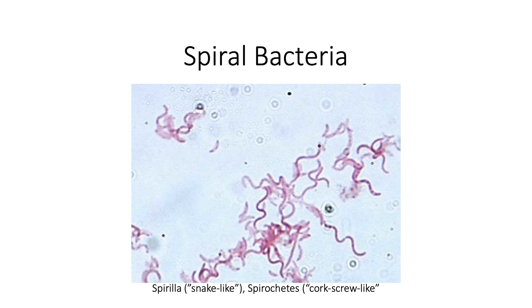Then you have your spiral bacteria. There are two main types of spiral bacteria. You have your spirilla, which is snake-like in appearance, and your spirochetes, which are corkscrew-like in appearance. Here in the example you have a spirilla. Meanwhile, spirochetes are longer and have a tighter spiral than your spirilla.